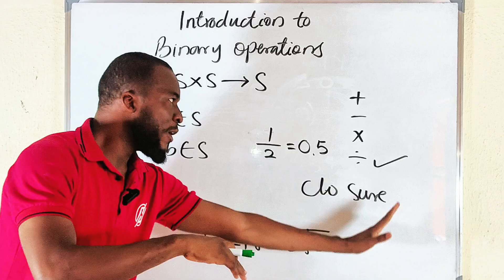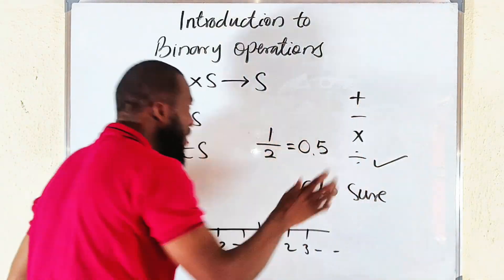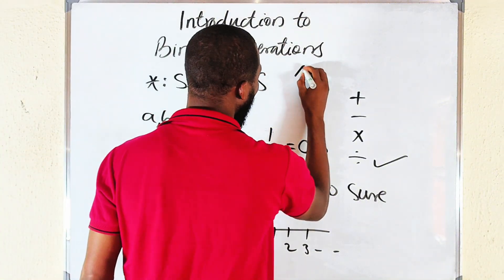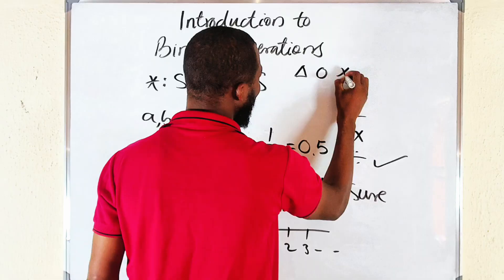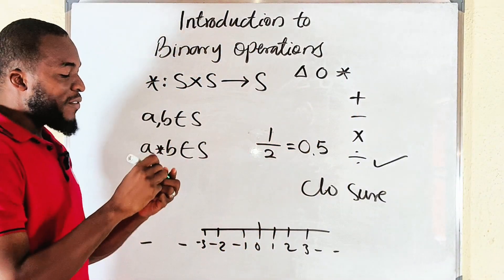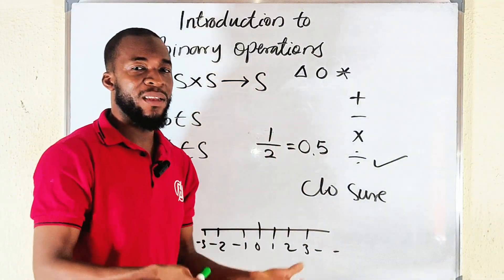That is what it means. So this is why I told you that not always, but for real numbers all of these four basic operations will satisfy. So apart from these four basic operations, you may see other operations in the binary, like a triangle, a cycle, you may see an asterisk. We commonly use this asterisk.